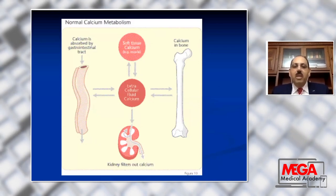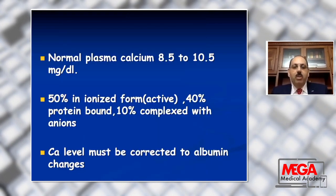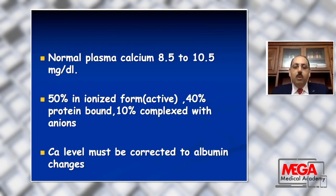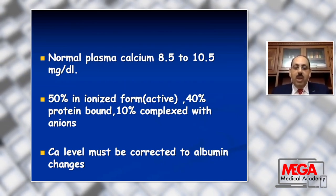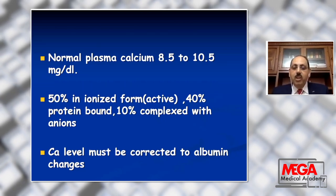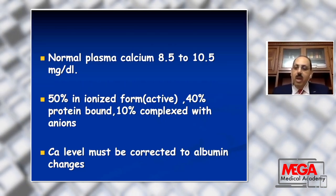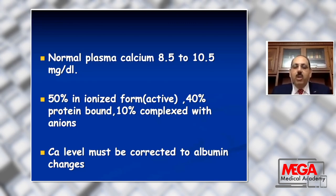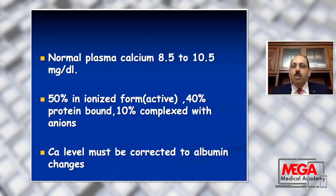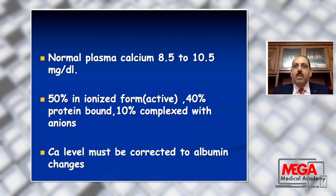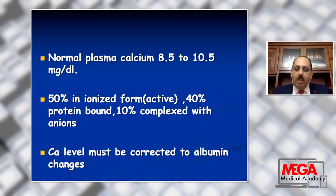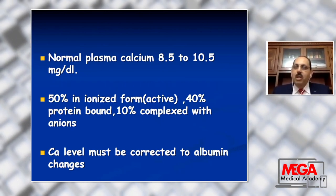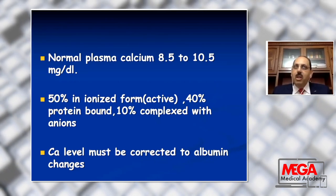The normal plasma calcium ranges from 8.5 to 10.5 milligram per deciliter. 50% is in the ionized or active form, and 40% is protein-bound. So calcium level must be corrected for albumin changes. In hypoalbuminemia — in cases of malnutrition, liver cirrhosis, or nephrotic syndrome — the protein-bound part of calcium is reduced but ionized calcium remains normal. However, in cases of alkalemia where pH increases, the ionized part of calcium will be lowered and should be corrected.